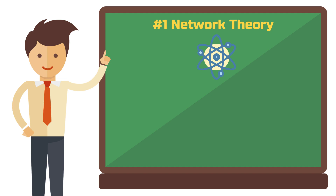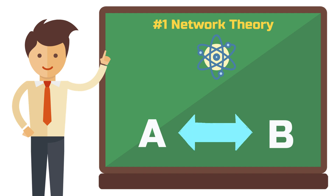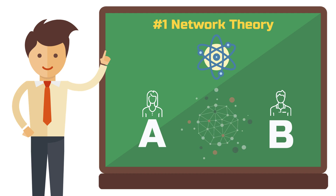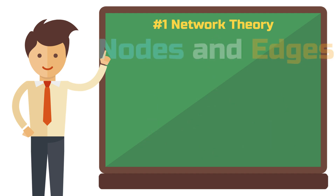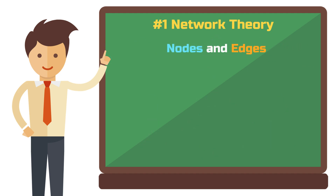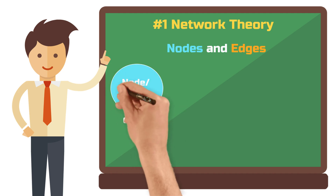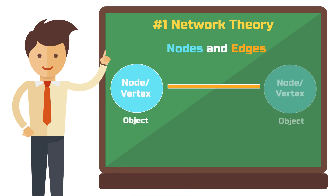Network theory deals with the relationships between specific objects. In the context of social network analysis, these objects are usually social actors. These relationships and objects are represented using a graph, meaning a diagram that connects two or more objects. In the vocabulary of social network analysis, an object is called a node or sometimes vertex. The relationship between two or more nodes is represented by edges — these are the lines between the nodes.